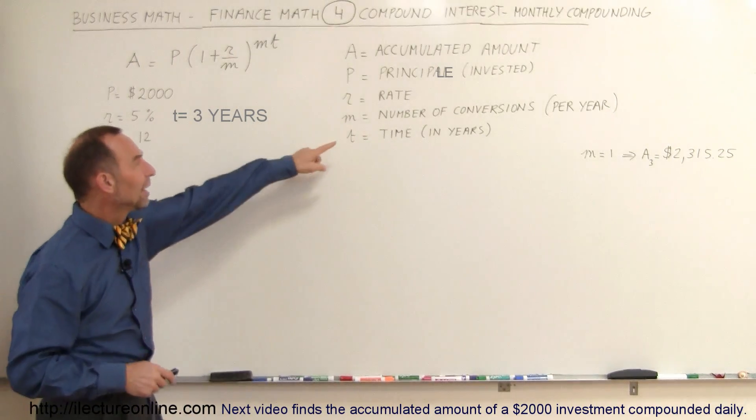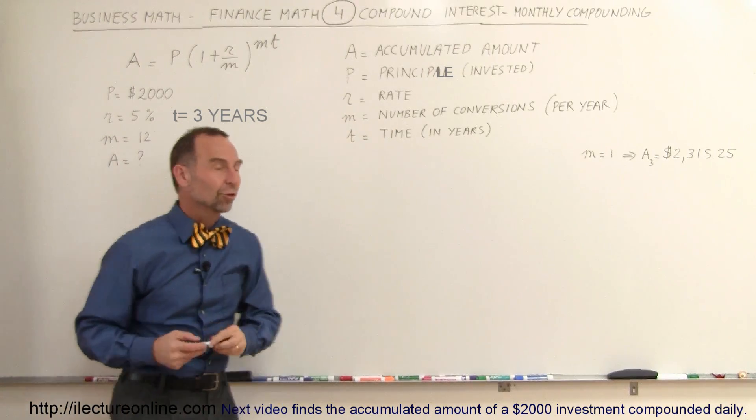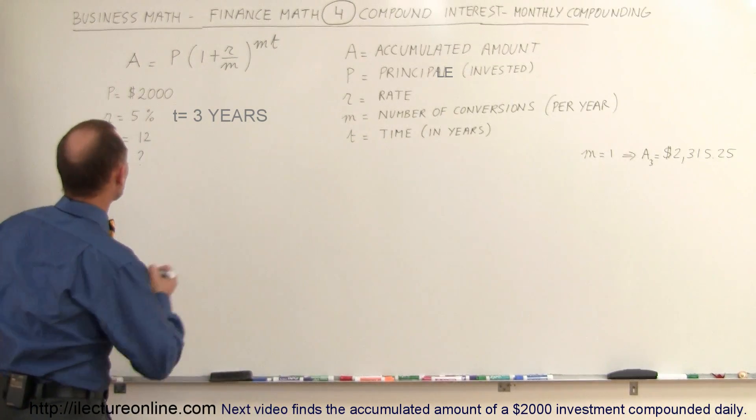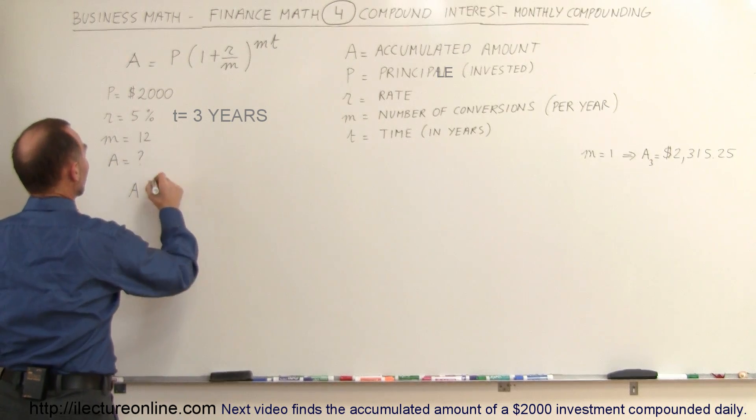Here M is going to be 12. M is the number of conversions. There's the equation we use, so the amount accumulated after three years is equal to the principal invested, which would be $2,000.